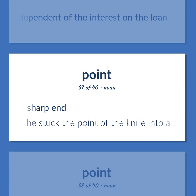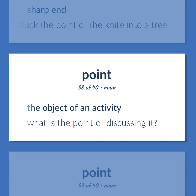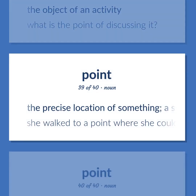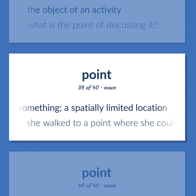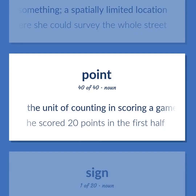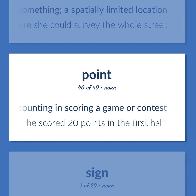Point: Sharp end. Example: He stuck the point of the knife into a tree. The object of an activity. Example: What is the point of discussing it? The precise location of something; a spatially limited location. Example: She walked to a point where she could survey the whole street. The unit of counting in scoring a game or contest. Example: He scored 20 points in the first half.